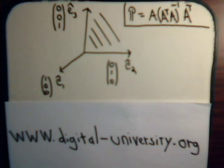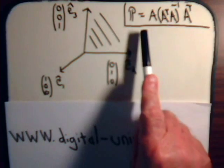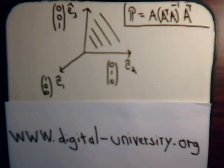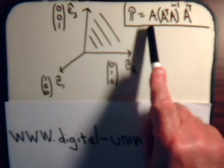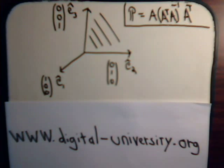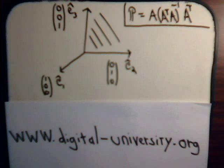In the last video, we derived this formula for the projection matrix, where we have a vector and we want to project it onto a subspace. The basis vectors that comprise the subspace also comprise the columns of matrix A. We're going to give a very simple demonstration in this video using the projection matrix. Then in the next video, we'll tackle a bit more of a complicated problem. The playlist for all the videos is at the website digital-university.org.